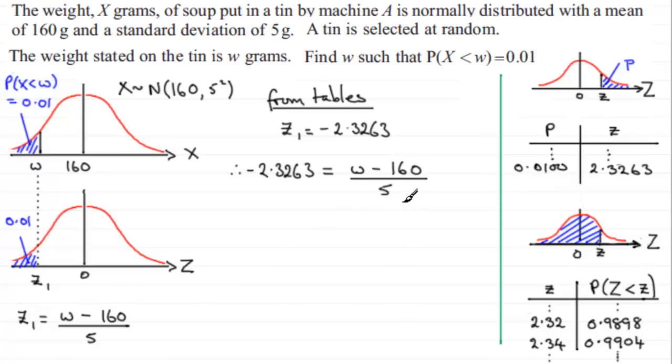And all I've got to do is rearrange this, times both sides by 5, and add 160 to get W. And if I do that, then we just get W equals 160 minus 5 multiplied by 2.3263. And if you work this out, what you find you get is 148.3685. And suppose you give it to one decimal place, the answer would be 148.4 to one decimal place.